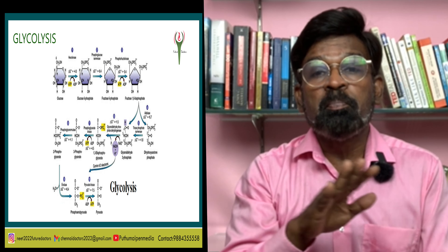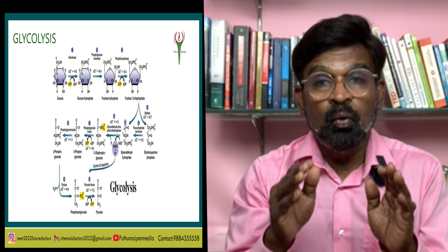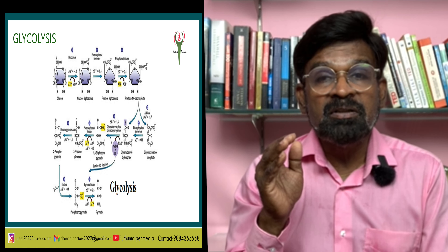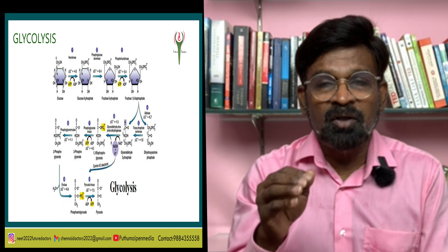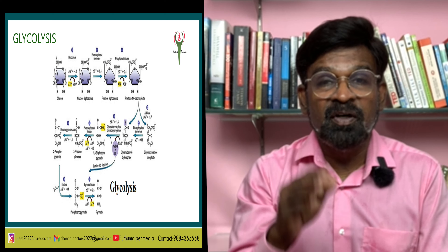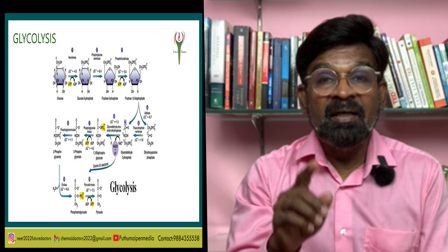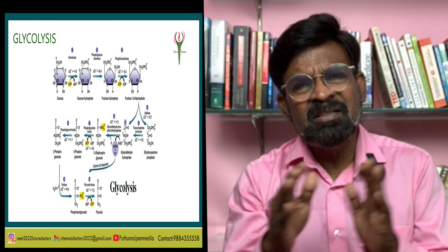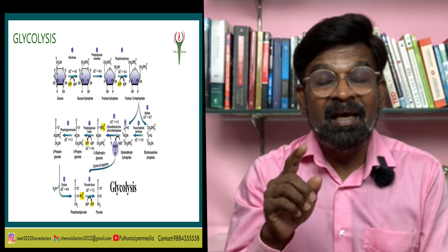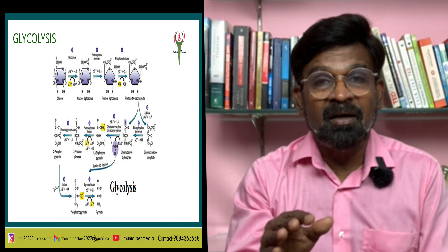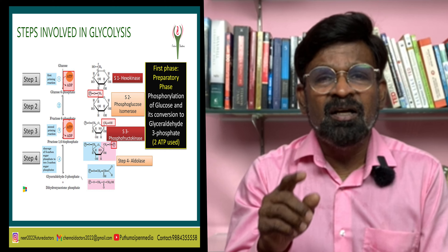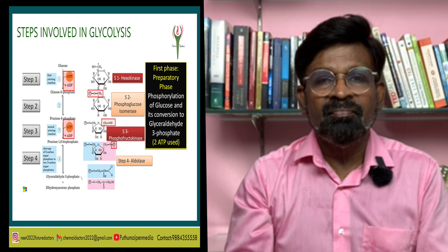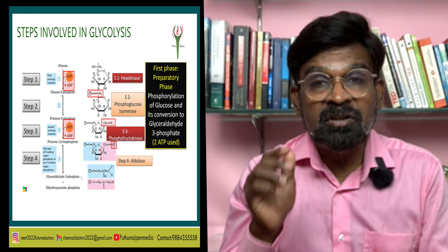During glycolysis, glucose gets partially oxidized. In plants, this glucose is derived from sucrose or from storage carbohydrates. Sucrose is first converted into glucose and fructose by the action of the enzyme invertase. These two monosaccharides then enter the glycolytic pathway. In glycolysis, a chain of 10 reactions occurs, each under the control of different enzymes.